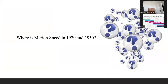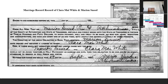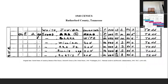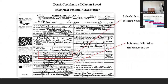Here's another research question: where is Marion Snead in 1920 and 1930? Marion is my grandfather. I found a marriage record for Marion Snead marrying Claire May White. I did find him in the 1940 census with their children, but when I searched 1930 and 1920, I could not find Marion Snead anywhere. I knew he was there because he got married there, so where was he? I found his death record, which lists his parents as Johnny Snead and Lily Snead. The informant was Sally White, who I knew was his mother-in-law.